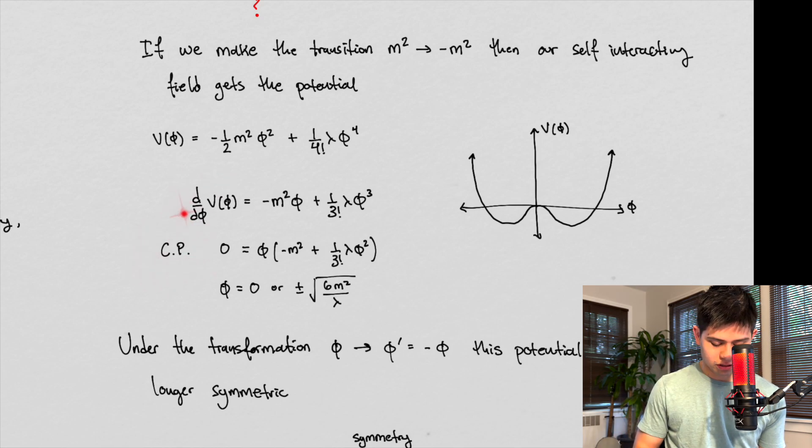when we take the derivative and then find the critical points, right? Finding the critical points is setting the derivative equal to zero, and we factor out phi, right? So we factor out phi here, we get this. We'll find that phi can be zero to satisfy a critical point, or phi can be plus or negative this value, right? And this is really just standard calculus and algebra.